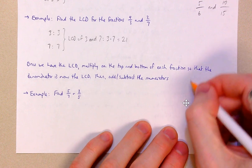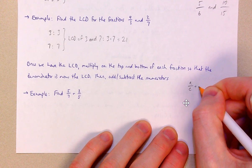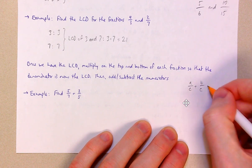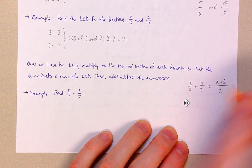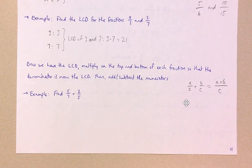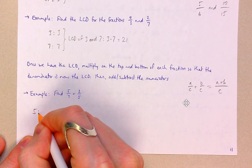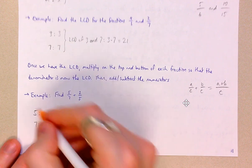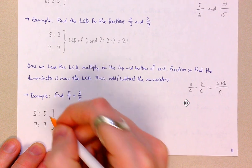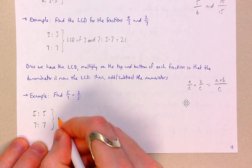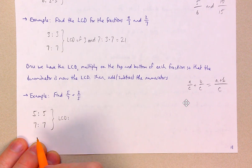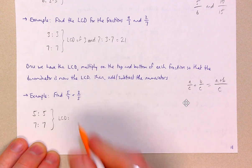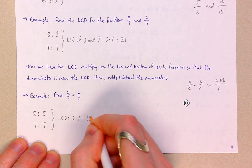We just add the tops, because if we add two fractions where the bottoms are the same, that's the same as adding the tops while the bottom remains the same. As an example, I'm going to find five-sevenths plus two-fifths. Take the bottoms — five and seven — write each as a product of prime numbers. Five and seven are themselves prime numbers, so the LCD of five and seven is just the product of five and seven, which is 35.